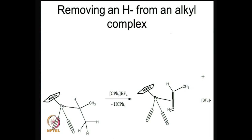There is one unusual method of synthesizing metal olefin complexes: removing a hydride ion. The trityl cation is stabilized by the presence of 3 phenyl groups and can abstract a hydrogen atom. If it abstracts a hydride from an alkyl complex, one ends up with an olefin complex. In this particular case, a propene complex is formed, which can be conveniently isolated using this method. So, alkyl complexes can be converted to olefin complexes in a few instances by use of the trityl cation.